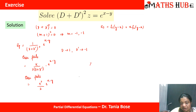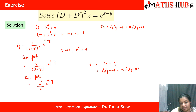The complete solution is z = f₁(y − x) + x · f₂(y − x) + (x²/2) e^(x−y).